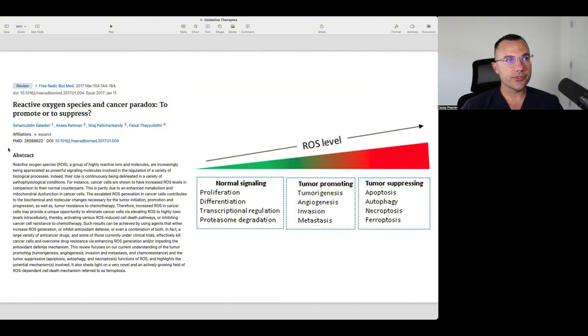Such results can be achieved by using agents that either increase ROS generation or inhibit antioxidant defenses, or even a combination of both. In fact, a large variety of anti-cancer drugs and some currently under clinical trials effectively kill cancer cells and overcome drug resistance via enhancing ROS generation and/or impeding the antioxidant defense mechanisms.